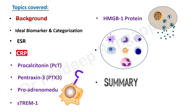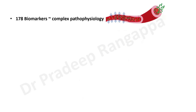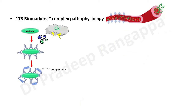As I said, there are around 178 biomarkers. The reason there are so many is that sepsis pathophysiology itself is quite complex, with multiple variables involved. When we talk about sepsis, there is a huge cytokine storm, a lot of pro-inflammatory variables, and many inflammatory markers.